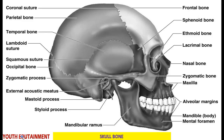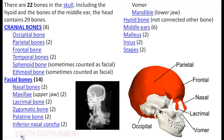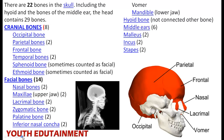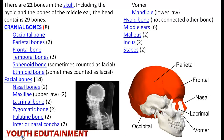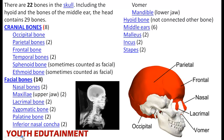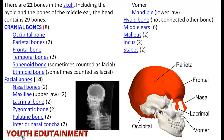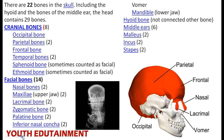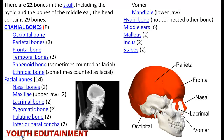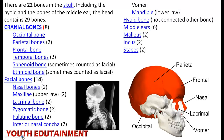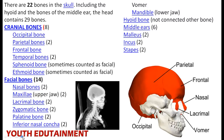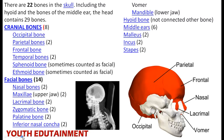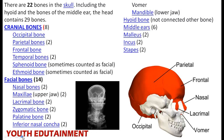The skull contains the frontal bone, parietal bone, lacrimal bone, nasal bone, zygomatic bone, maxilla, and mandible — you may look at this diagram. There are 22 bones in the skull including the bones of the middle ear. The head contains 29 bones: cranial bones — occipital, parietal, frontal, temporal, sphenoid, and ethmoid — and facial bones — nasal, maxillary, lacrimal, zygomatic, palatine, and inferior nasal concha.